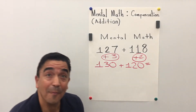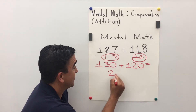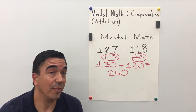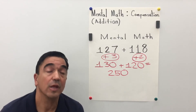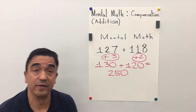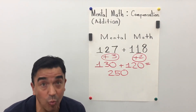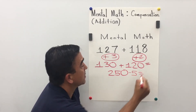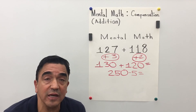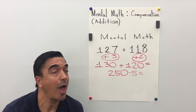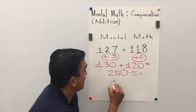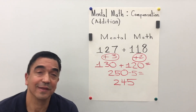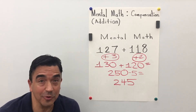Boy, was that easy using this strategy! But there's still one more step. Don't forget, we added 5 total, so now we have to take away 5, and 250 minus 5 equals 245. And that concludes our lesson.